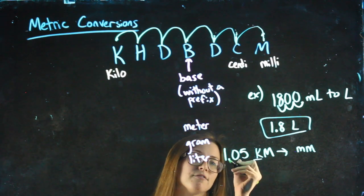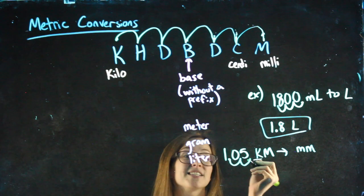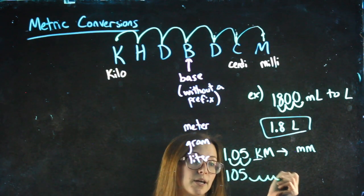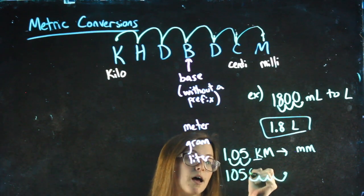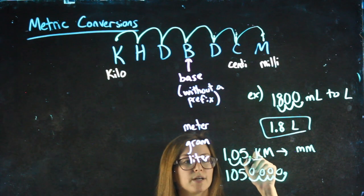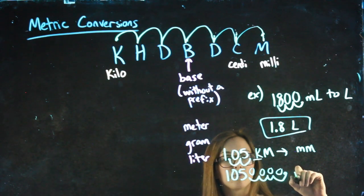So this 1.05, I moved the decimal twice to the right, but I need to move it six times. So one, two, three, four more times, I fill in with zeros. It was two to get to the other side of the five and then four more, so then I did six total. And that would be millimeters.